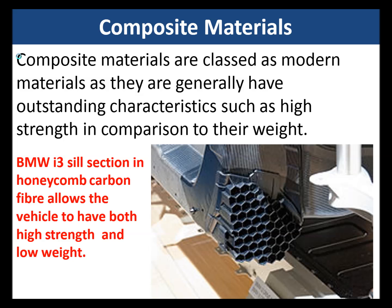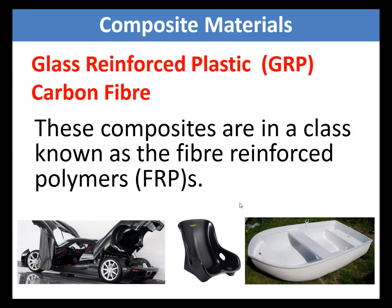Composite materials are often classed as modern materials and they generally have outstanding characteristics such as high strength in comparison to their weight. Here we see a honeycomb section from a BMW i3, which allows the vehicle to have both high strength and very low weight. The first composite material we're going to look at is glass reinforced plastic — GRP — and these composites are in a class known as fiber reinforced polymers, FRPs.